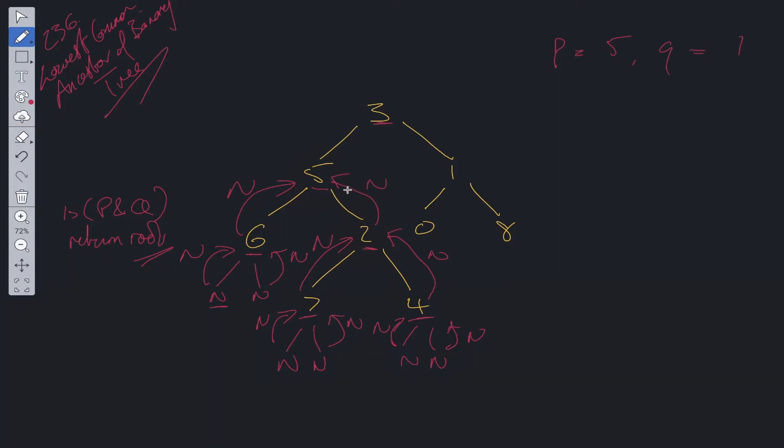Now at 5, we make a check. Is P and Q present? No. So we check whether the root is equal to P or Q. 5 is equal to P. This is where we can return up the value of 5.